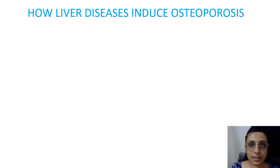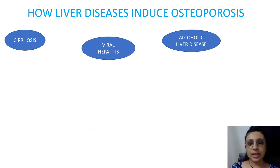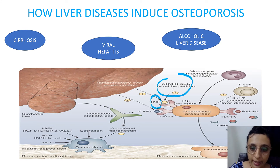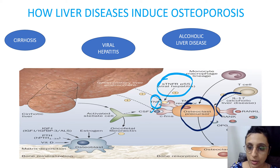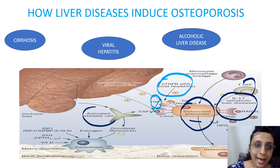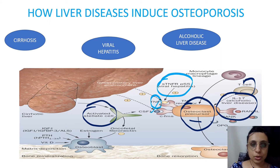How do liver diseases induce osteoporosis? Diseases like cirrhosis, viral hepatitis, and alcoholic liver disease result in the activation of various cytokines. Viral hepatitis leads to increased TNF and thus increased osteoclast activation. Alcoholic liver disease causes TH17 activation and osteoclast activation. In cirrhosis, activated stellate cells decrease osteoblast activation. All result in defective bone remodeling and thus osteoporosis.